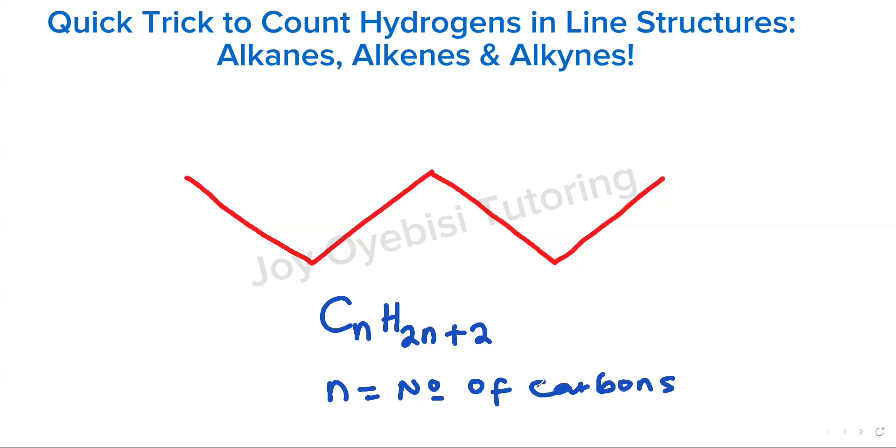So the first thing we do here would be to figure out the total number of carbons in this structure. So the carbons are all the corners, the ends and the corners. So this is a carbon. So those are all your carbons.